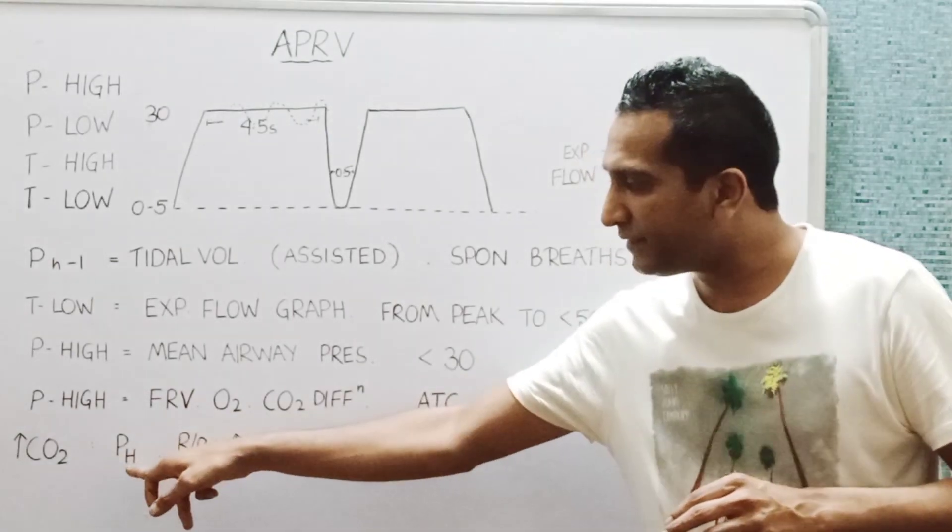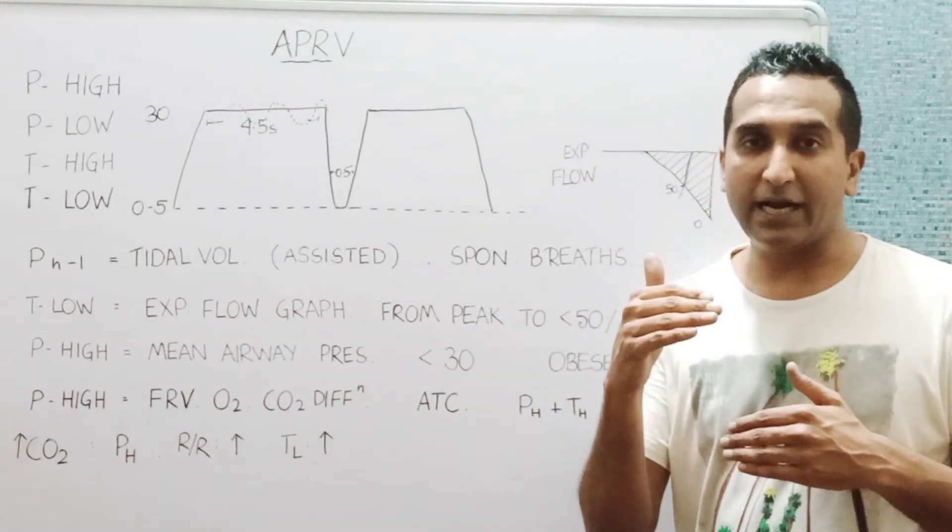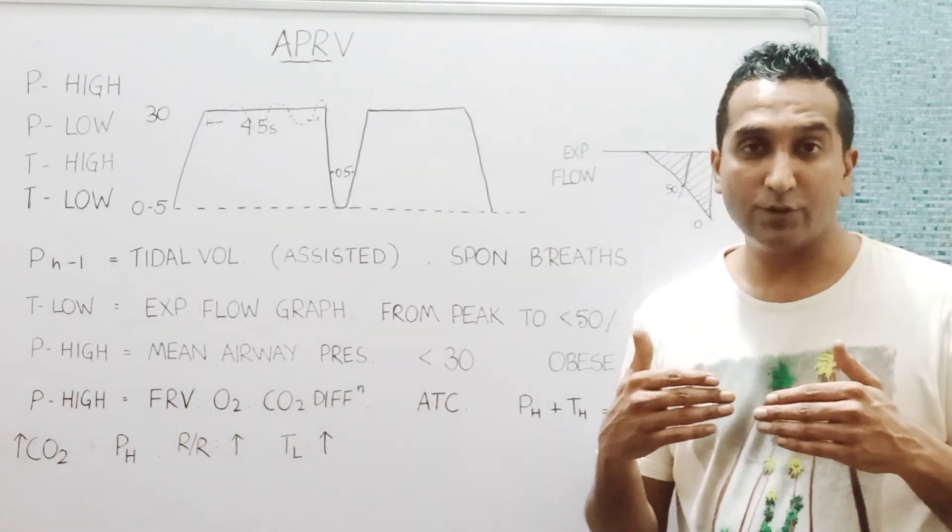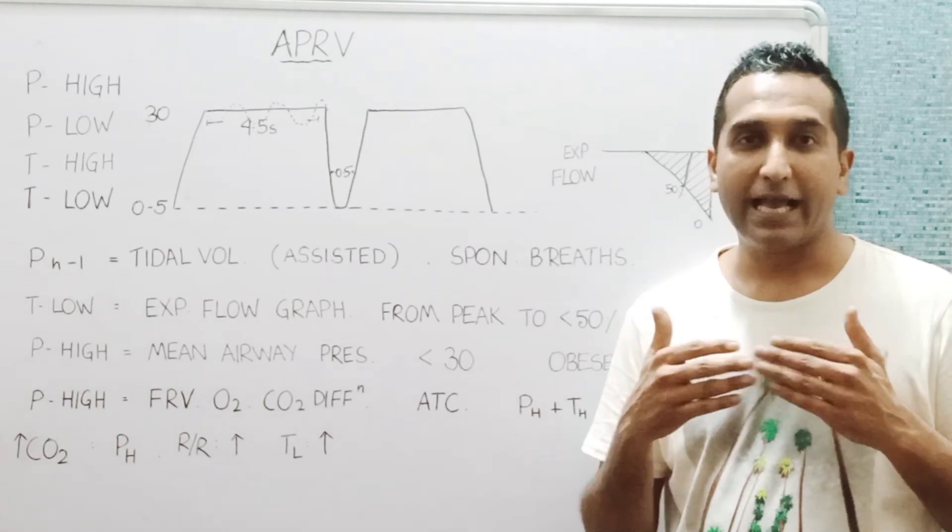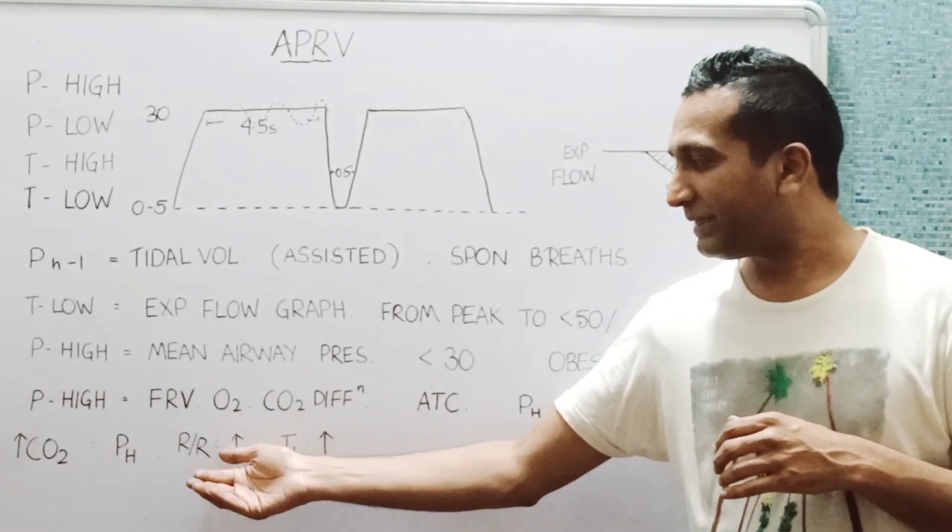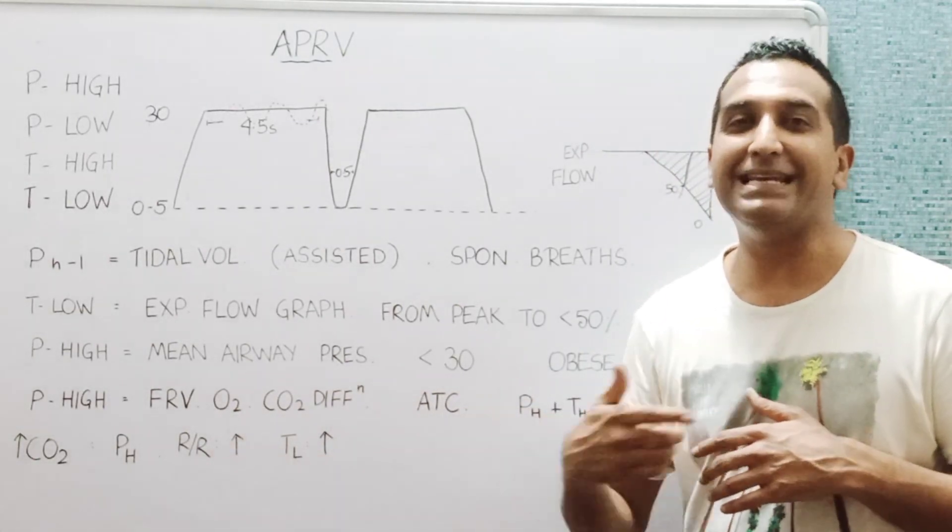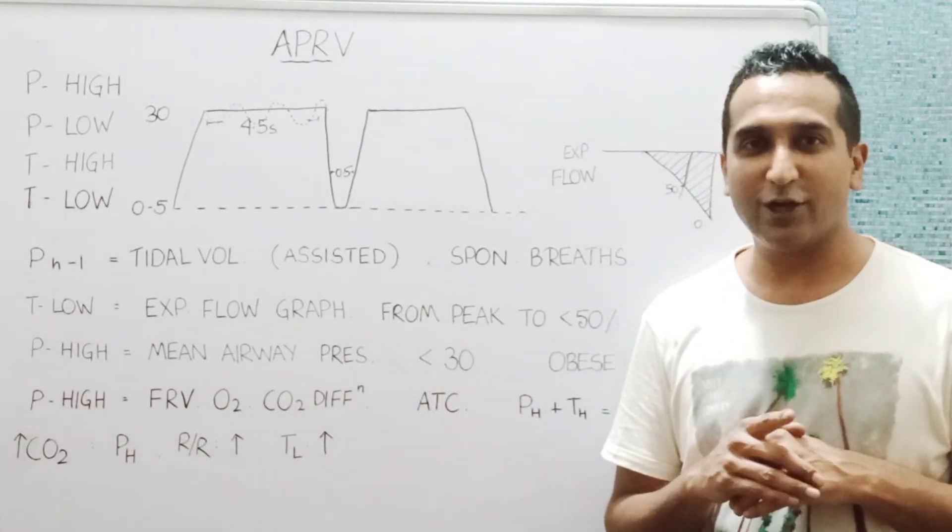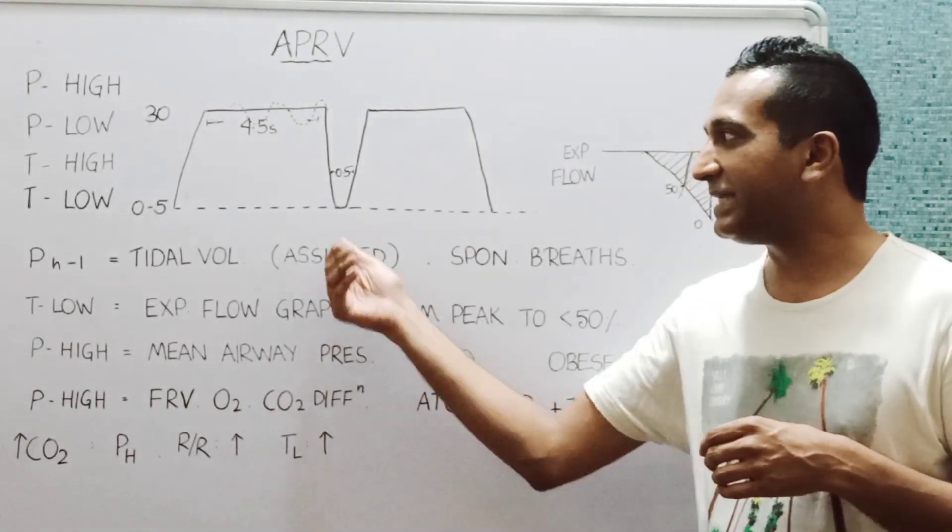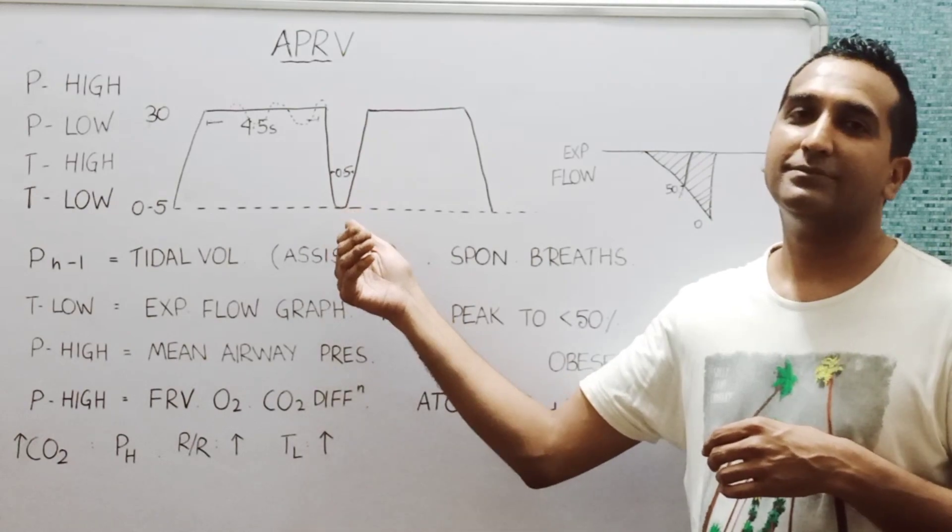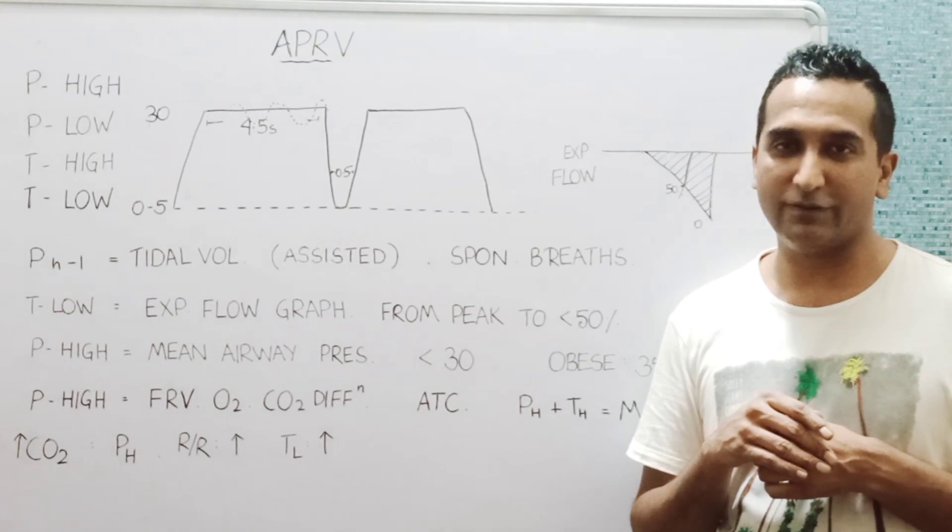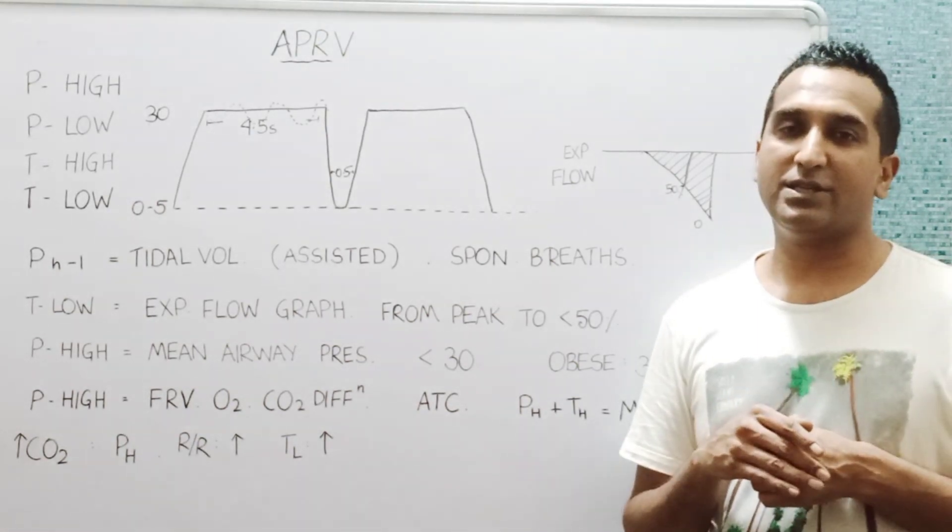For carbon dioxide, the first thing we do is raise the P high a little to get them at adequate functional residual volume so they can breathe spontaneously well and blow off the carbon dioxide. You may have to increase the respiratory rate, or you can call them increase the releases, but that will always cause de-recruitment and decrease the mean airway pressures. Or you can increase the T low, but always make sure that you do not fall tremendously in the expiratory flow curve because that will cause de-recruitment.